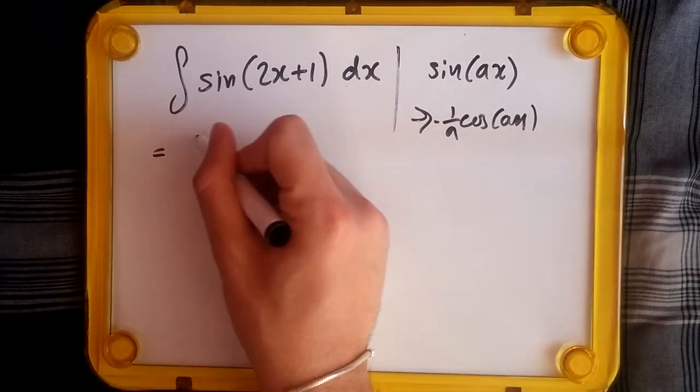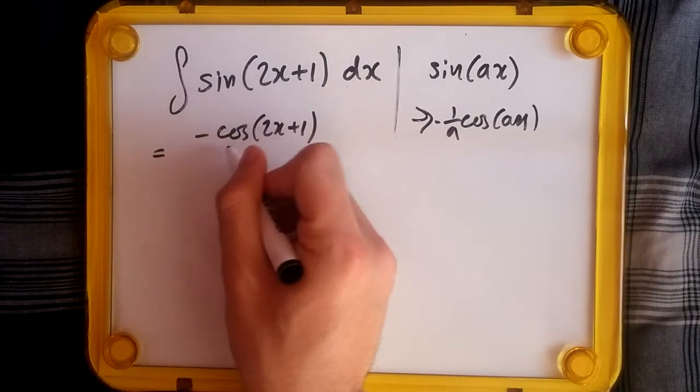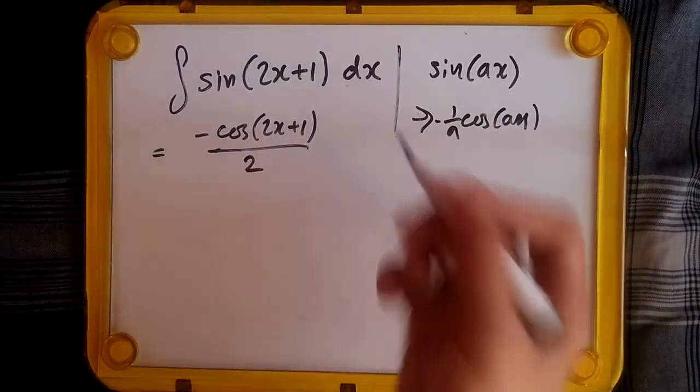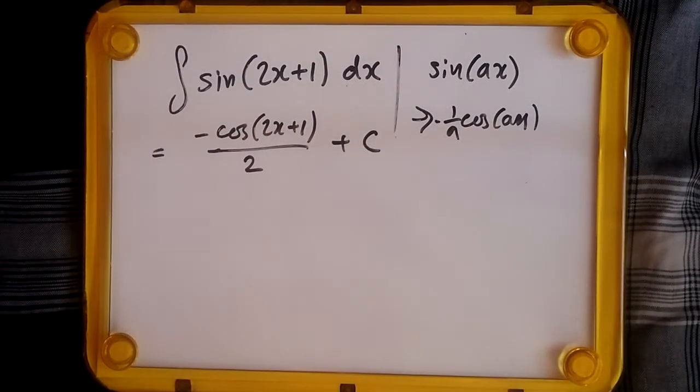Well, using the same rule applied, we know it becomes a negative cos 2x plus 1, and then we just differentiate inside which gives us a 2. And of course we must add the C because it's an indefinite integral.